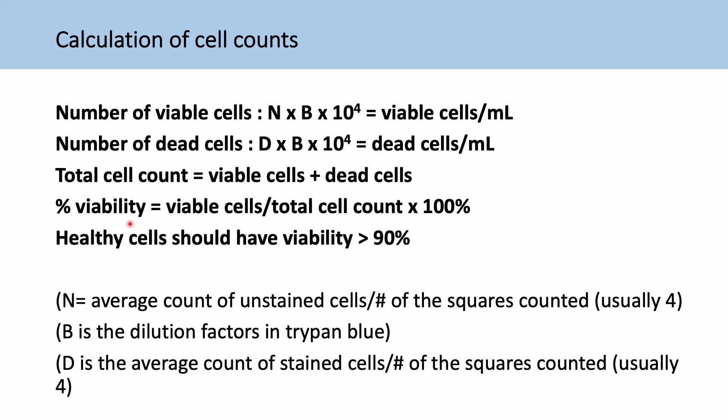Then your percentage viability is your viable cells divided by your total cell count, then multiply by 100 to get a percentage. And healthy cells should have around 90% viability because you'll always have a few dead cells just because of the kind of normal turnover and cell cycle.